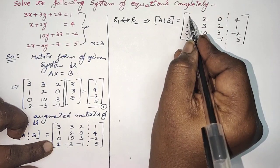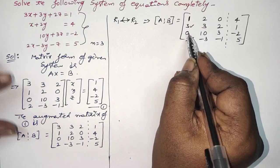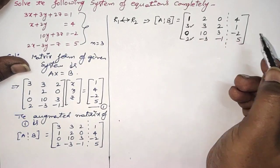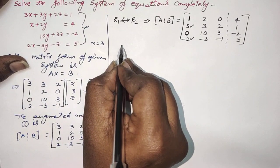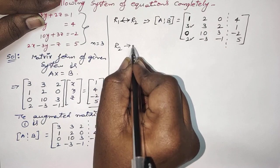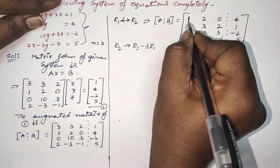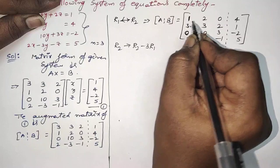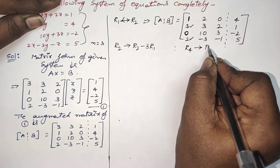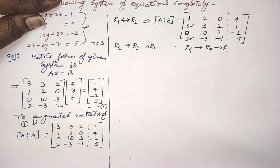Now using the leading 1 in row 1, we have to make the elements below it zero. This element in row 3 is already 0, so don't disturb the third row. The operations are: R2 → R2 minus 3·R1, and for the last row: R4 → R4 minus 2·R1. Do the operations here directly — don't use rough work in exams.